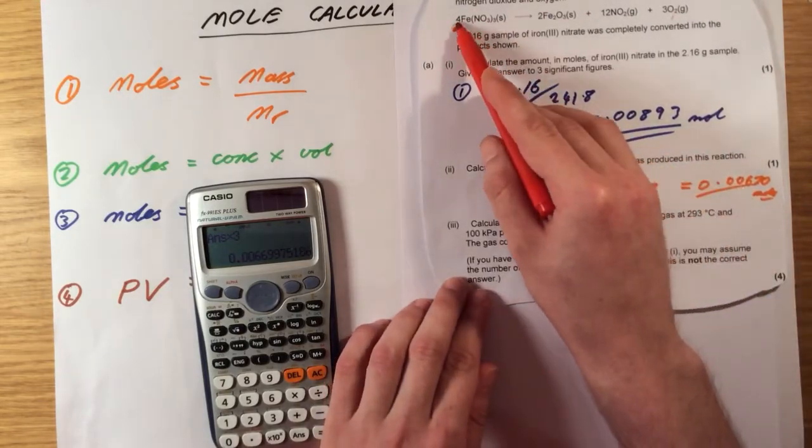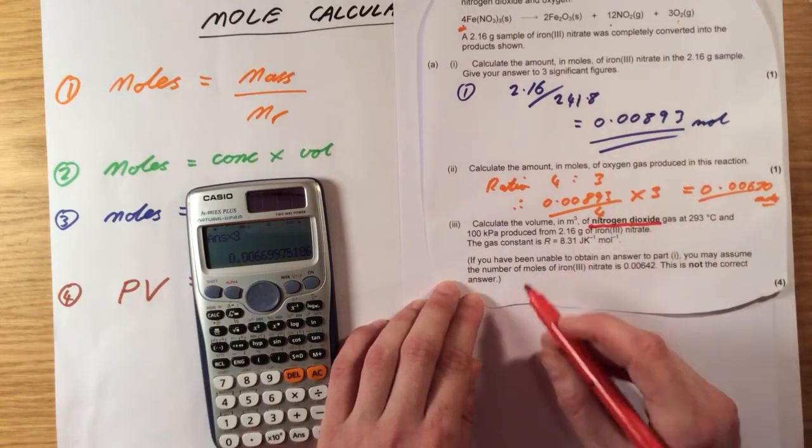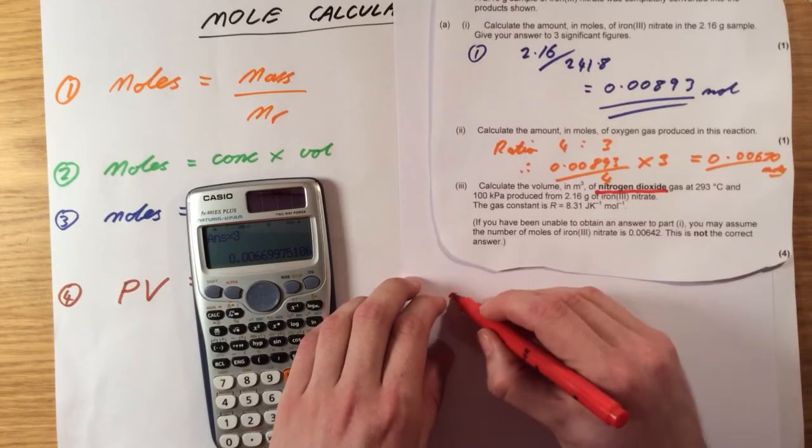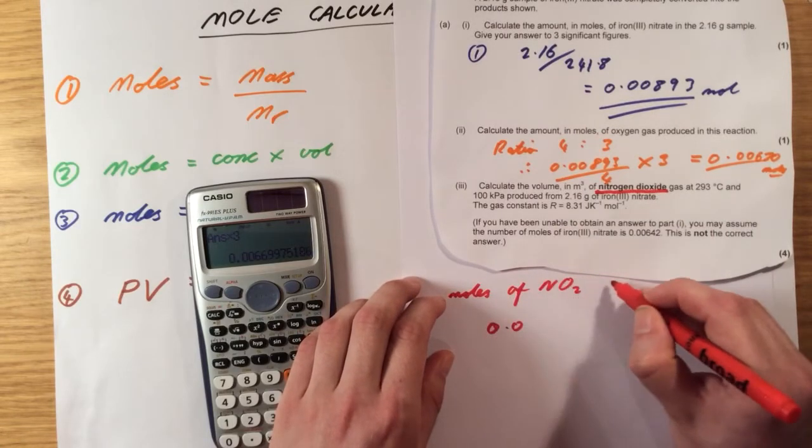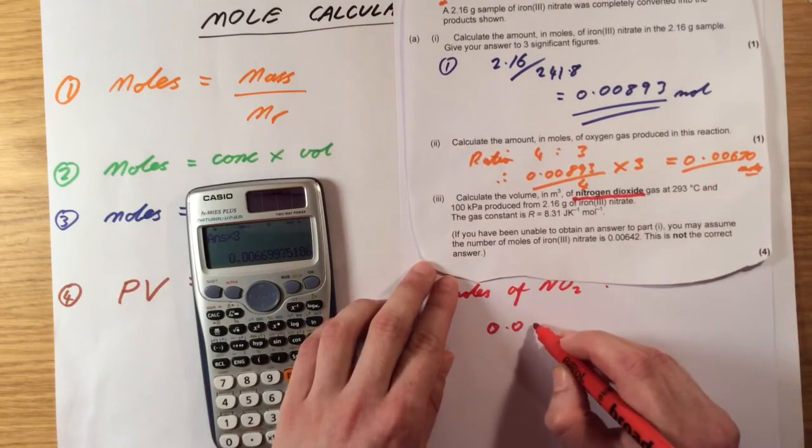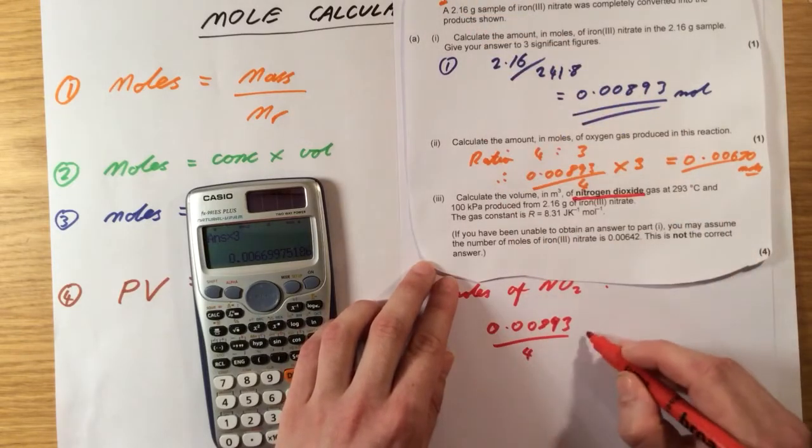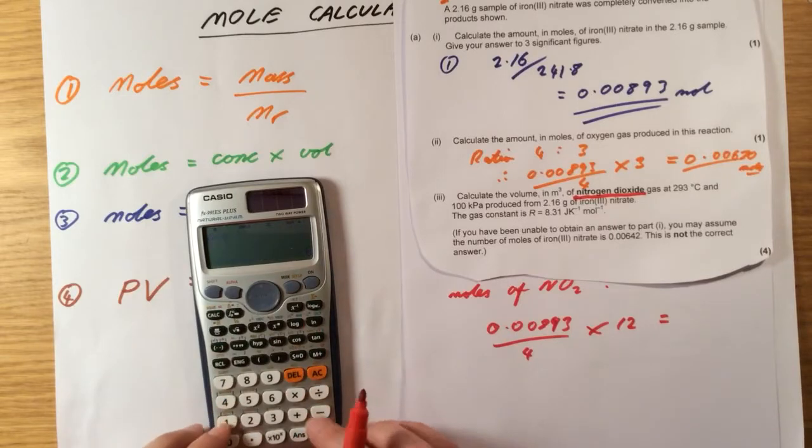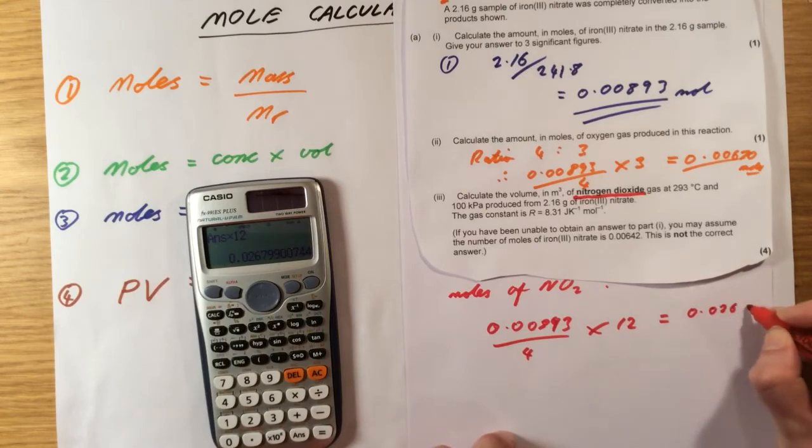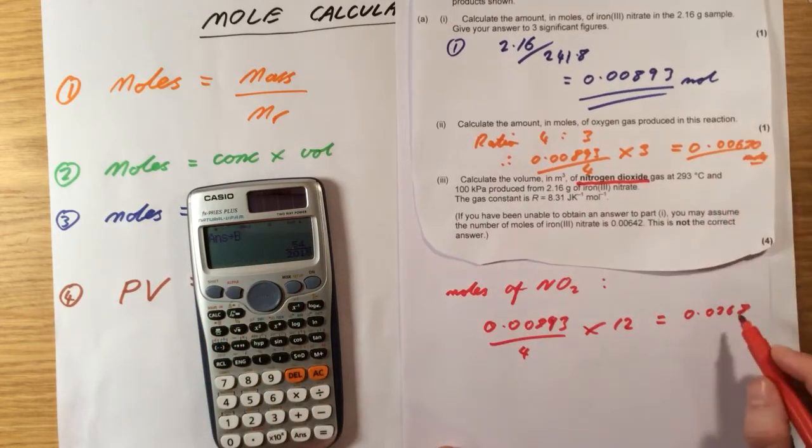So the first thing we need to do is actually calculate the moles of nitrogen dioxide. Let's look at the top, the ratio is 4 to 12. So therefore, I'm going to use my value here. Let's write this out in full. So moles of NO2. I'm going to use the same idea again. 0.00893 divided by 4 times 12. Luckily I've kept that stored as A, so I'm going to just do A divided by 4 times 12. And I get 0.0268. I'm going to store this as B.